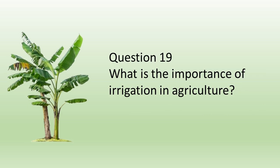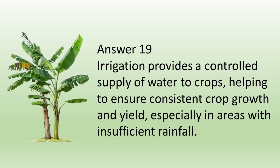Question number nineteen: What is the importance of irrigation in agriculture? Answer: Irrigation provides a controlled supply of water to crops, helping to ensure consistent crop growth and yield, especially in areas with insufficient rainfall.